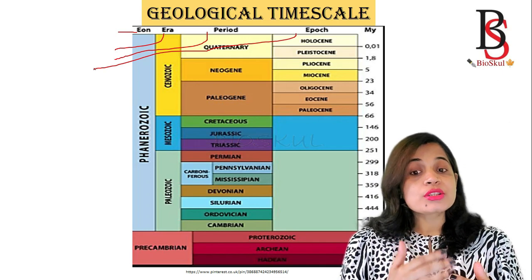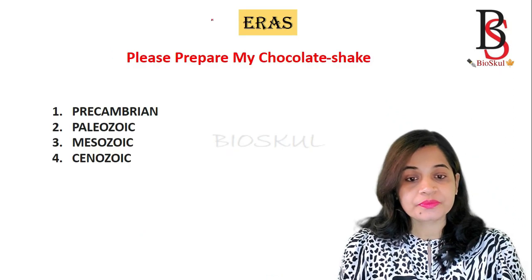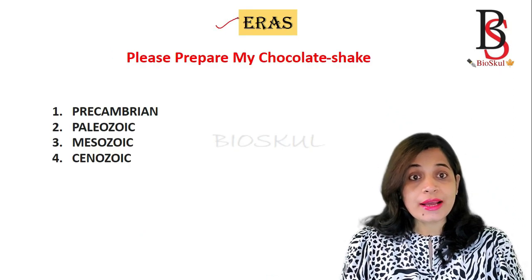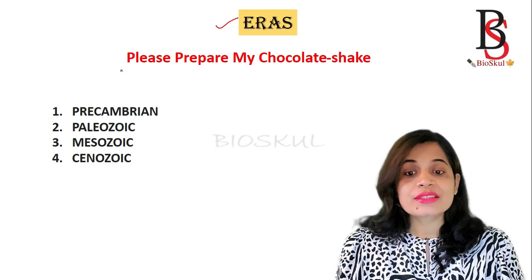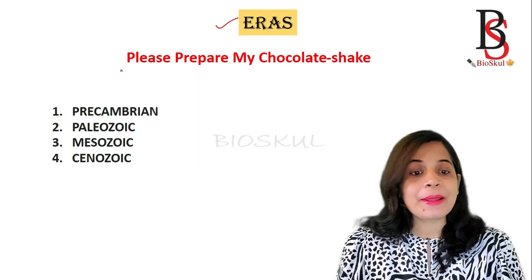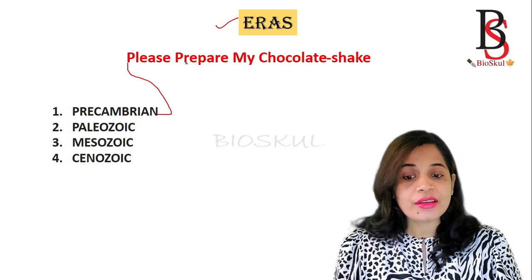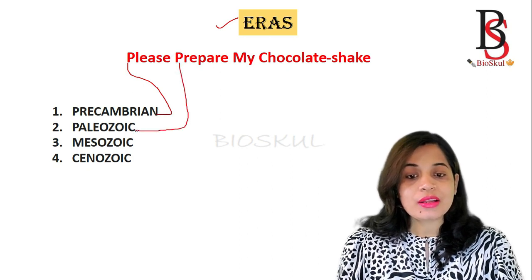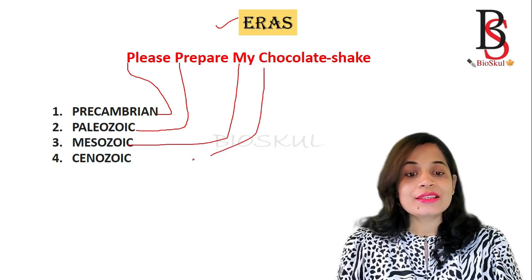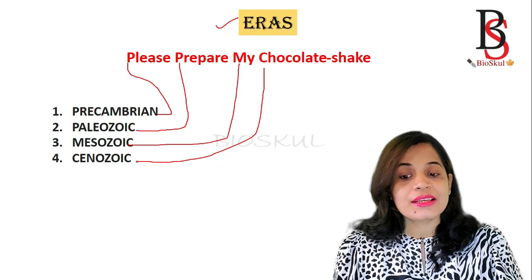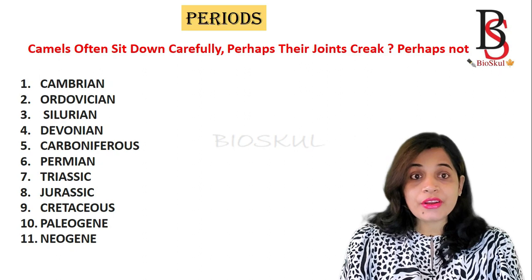Now we will see the mnemonics to memorize the eras. The eras can be memorized with this mnemonic: 'Please Prepare My Chocolate Shake.' Here P is for the Precambrian, the second P is for the Paleozoic, M is for the Mesozoic era, and C is for the Cenozoic era.